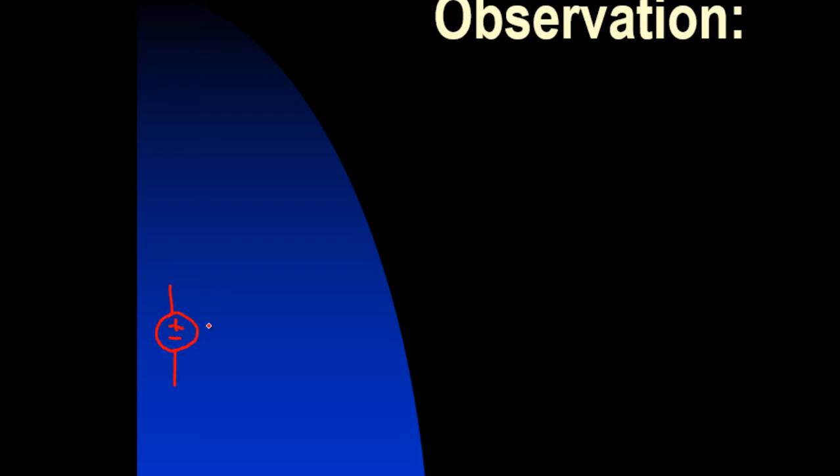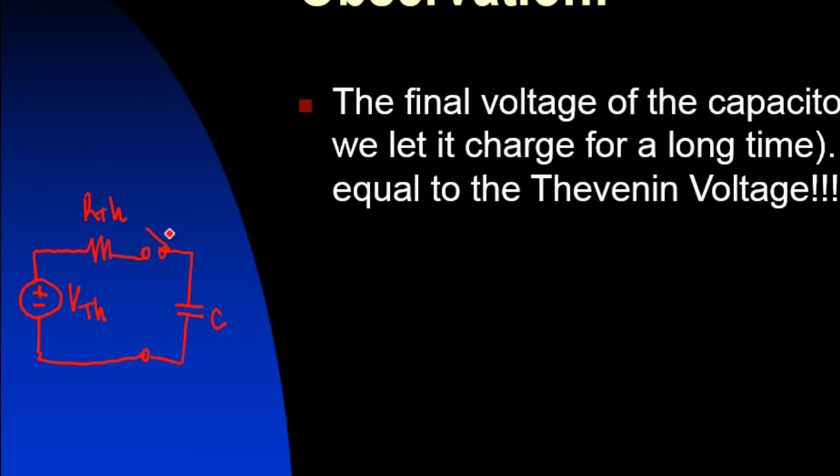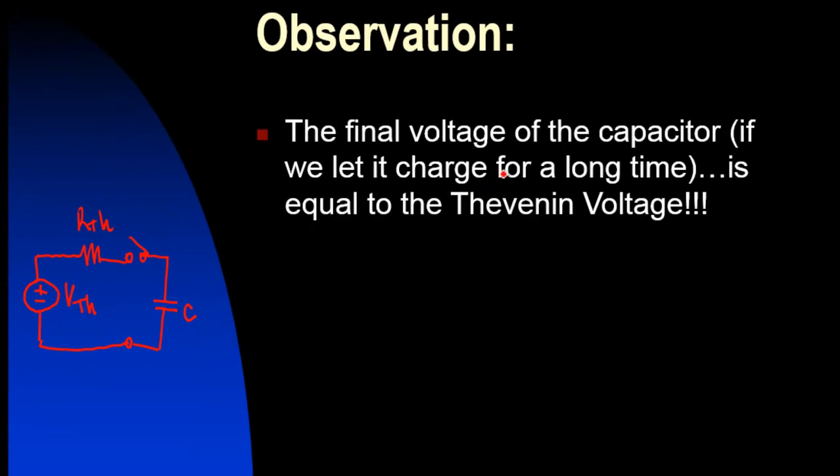One thing we said is that if we connect the capacitor to a Thevenin circuit, like this, the final value of the voltage in the capacitor, if we let it charge for a very long time, there's the catch, will be the Thevenin voltage. So if we close the switch, regardless of what the initial voltage in the capacitor was, and we wait long enough, the final voltage in the capacitor will be VTH. That is what we said in class.